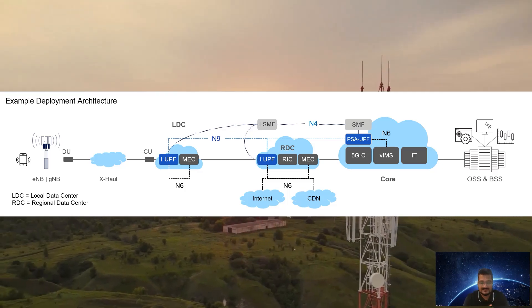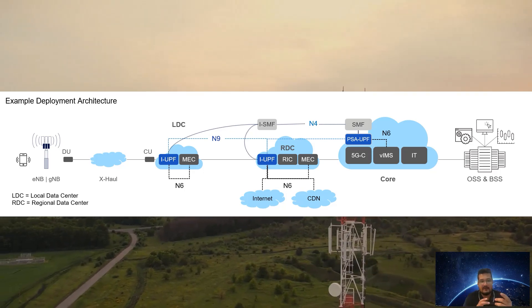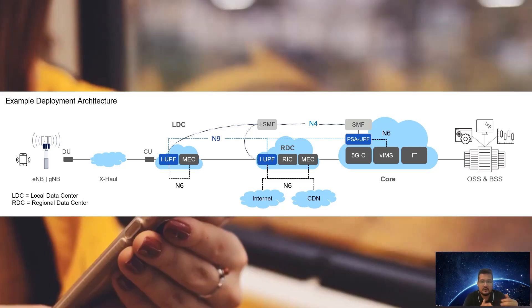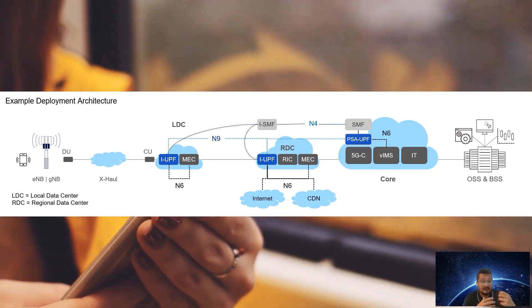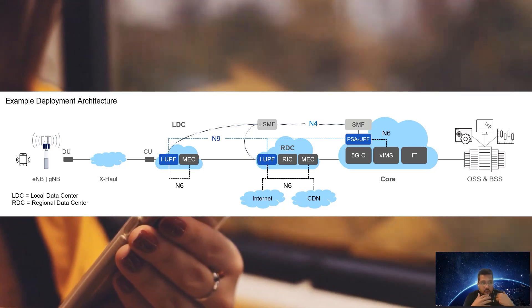In Release 14, 3GPP introduced the Control and User Plane Separation — CUPS — architecture, which was a significant enhancement to the legacy EPC architecture, separating the control plane and user plane functions of the serving and PDN gateway. However, in the context of EPC, this separation was still only partial. 5G, on the other hand, truly enhanced this separation by adopting a service-based and distributed architecture. 3GPP Release 15 introduced all the necessary features for user plane distribution, such as multiple IP anchor points for mobility, with the provision of inserting an intermediate UPF or doing UPF chaining.